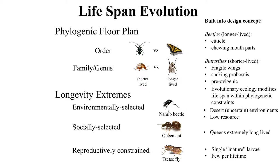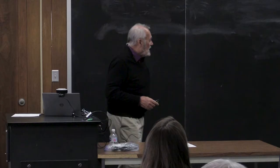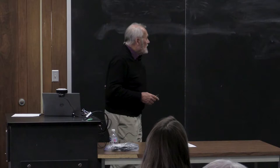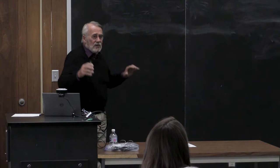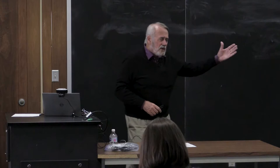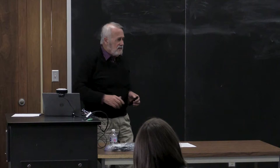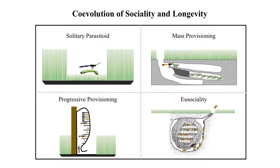For social species, there's a famous wasp biologist, Howard Evans, who developed the evolution of sociality in wasps through 13 different stages — from a solitary parasitoid to full eusociality. I collapsed these to four stages. This raises the question: which came first, the sociality or the longevity? What was a pre-adaptation for the other? I think this applies to humans as well.